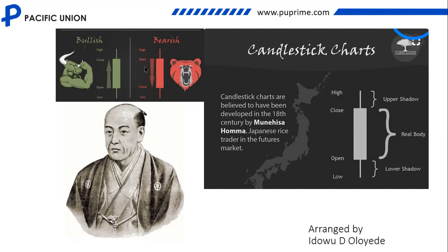Why are they called a bullish candle? They are called a bullish candle due to the attacking nature of a bull. We all know that if a bull wants to attack, it takes you from the bottom and throws you to the top with its horn — it fights from the bottom and uses its head to throw you up. That attacking nature of the bull is the behavior we see in price movement. So when price opens from the bottom and closes at the top, we anticipate that it is a bullish candlestick pattern, which means the price is going up.